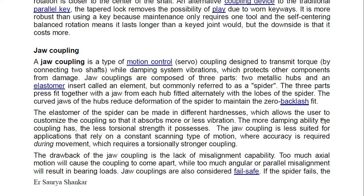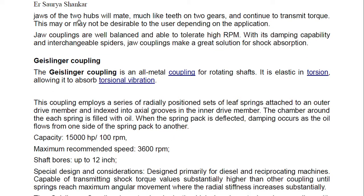The curved jaw of the hub reduces deformation of the spider to maintain zero backlash fit. The elastomer spider can be made in different hardness levels, allowing the user to customize vibration absorption — the more damping ability, the less torsional strength. The jaw coupling is less suited for applications requiring constant scanning motion where accuracy is needed. Drawbacks include lack of misalignment capability; too much axial motion will cause it to come apart, while too much angular or parallel misalignment causes bearing loads. Jaw couplings are considered fail-safe and well balanced, able to tolerate high RPM.